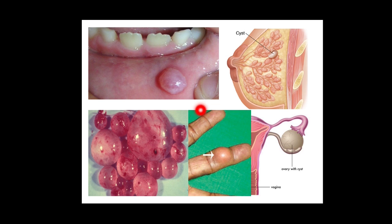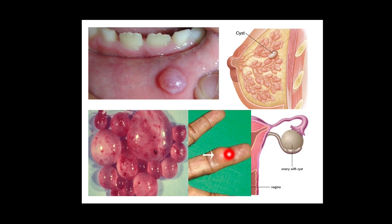These are the acquired varieties. This is a retention cyst known as the mucous cyst of the lip. This here is a distension cyst — the breast cyst. This is a hydatid cyst, which is a parasitic cyst. This is an implantation dermoid. And this is another example of a distension cyst — an ovarian cyst.